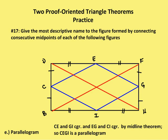Going to the midline theorem again: by the midline theorem, CE is congruent to IG, because BF as the midline is the base — CE is half of BF and IG is half of BF. If they're both half of one value, they're going to be equal. So CE and GI are congruent. By the same midline theorem, EG is congruent to CI — DH is the base of the triangle, CI is half of DH, and EG is half of DH. So now I have a parallelogram, with opposite sides congruent. The most descriptive name is a parallelogram.